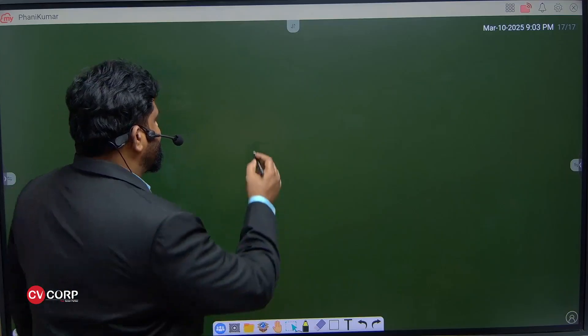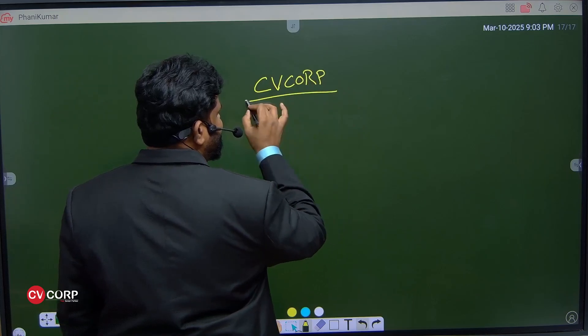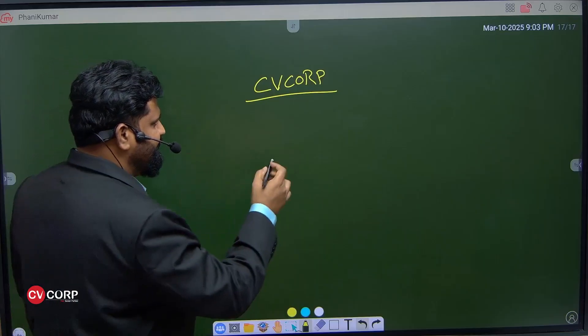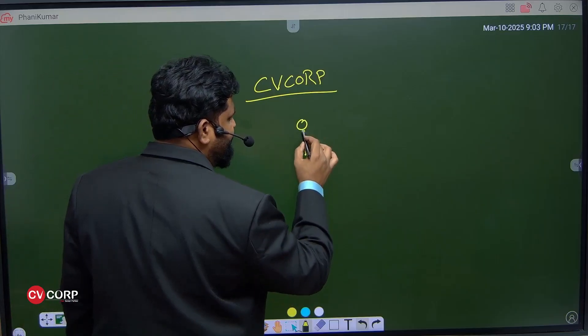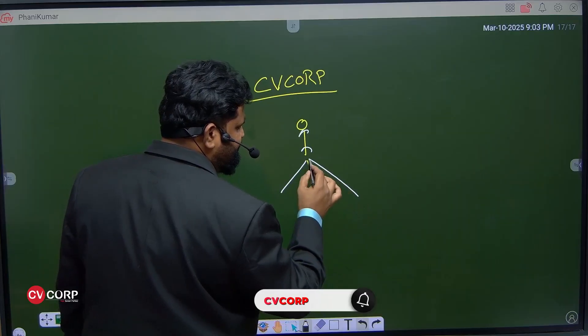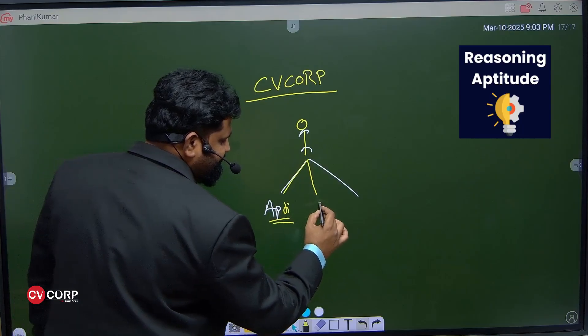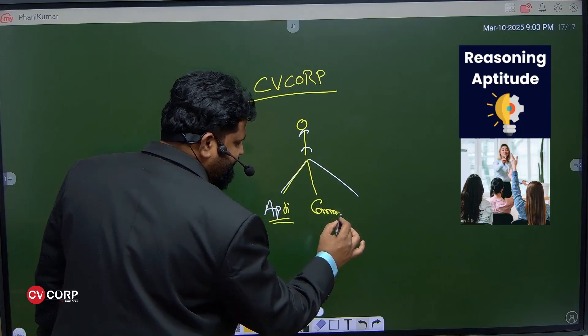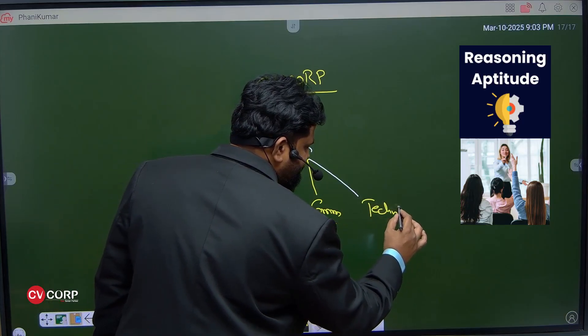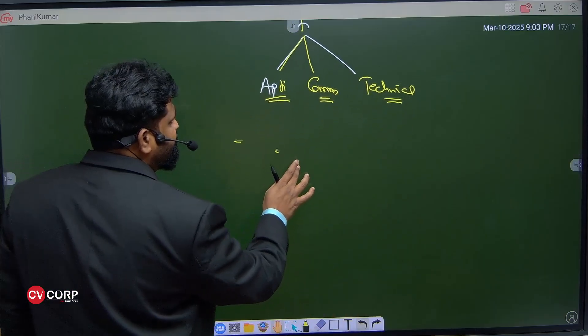Basically, the heading you can keep it as 'what CV Corp teaches' or 'what industry wants' - both are the same thing. Any fresher when they go for a campus placement will be evaluated based on three parameters: first is aptitude skills, second is communication skills, and third is technical skills. At CV Corp, we focus on these three things.